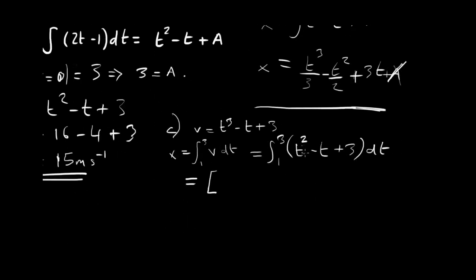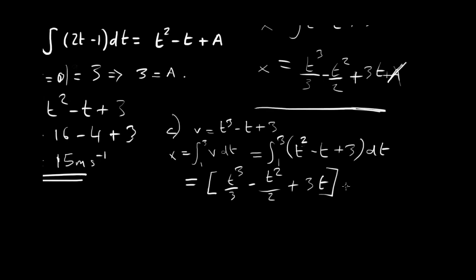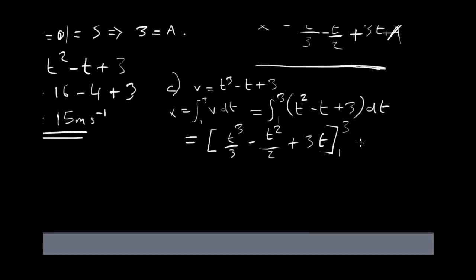And so, what do we get? We get t cubed over 3 minus t squared over 2 plus 3t. We don't need a constant of integration because we have a definite integral. And so, this is going to be between 1 and 3. So, the way we do this normally is we always put in the 3 in here and we compute, we work out what that is and then we subtract the same expression but with a 1 inside and then we get an answer.